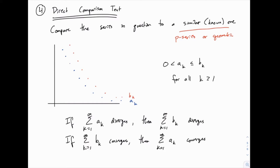The direct comparison test is pretty limited, as we'll see. Our next comparison test, the limit comparison test, is broader in its application. Anything we can do with the direct comparison test, we can also do with the limit comparison test. So after this example, we won't really use this test very much — we'll default to the limit comparison test because it's a safer option, works more often, and is often easier to do. But the direct comparison test is a good introduction because it gets us thinking about how to compare a series to another one.